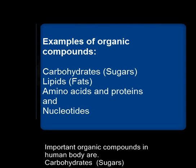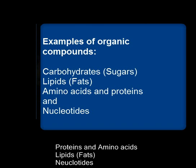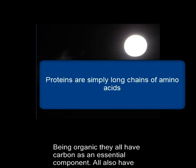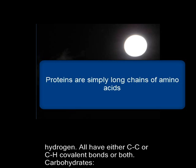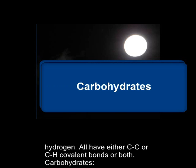Important organic compounds in the human body are carbohydrates, proteins and amino acids, lipids, and nucleotides. Being organic, they all have carbon as an essential component. They also all have hydrogen, and all have either carbon to carbon or carbon to hydrogen covalent bonds, or both.